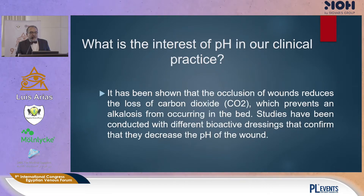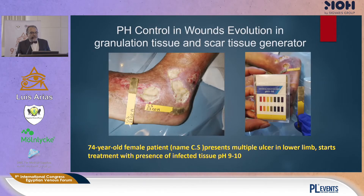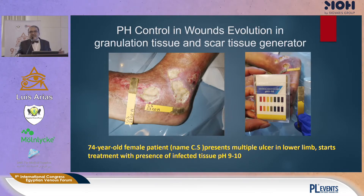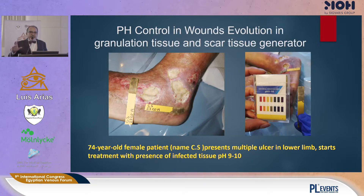What is the interest of pH in our clinical practice? It has been shown that occlusion of wounds reduces the loss of carbon dioxide, which prevents alkalosis from occurring in the wound bed. Studies have been conducted with different bioactive dressings that confirm they decrease the pH of the wound. For the pH control measurement, we use bands — the same ones used for pH water control, found in regular stores, not medical supplies. We simply place the band and take pictures to monitor the evolution.